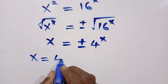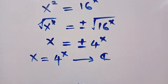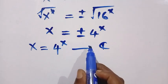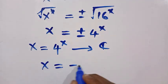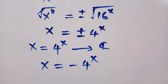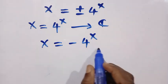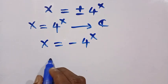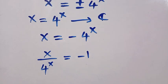Since we have plus or minus, we consider two cases. When x equals 4^x, solving gives a complex value, and we are interested in real solutions. Therefore we consider x equals minus 4^x. Dividing both sides by 4^x gives us x divided by 4^x equals minus 1.